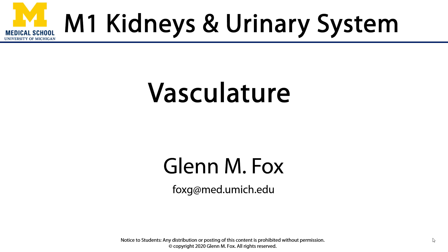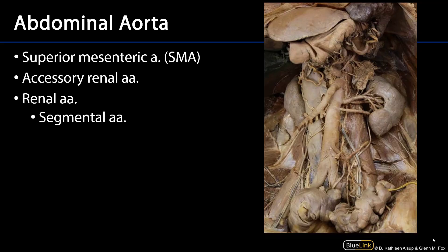Let's talk about the renal vasculature. The renal arteries — we can see the left renal artery here as well as an accessory left renal artery, which would be a hilar accessory renal artery because it's going into the hilum — are branches of the abdominal part of the descending aorta, or just the abdominal aorta, which I am outlining here.